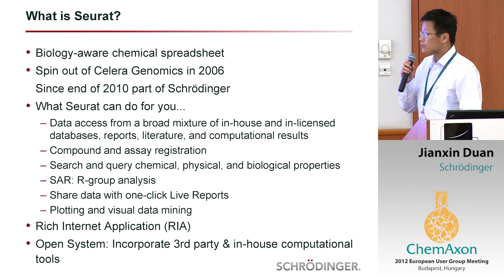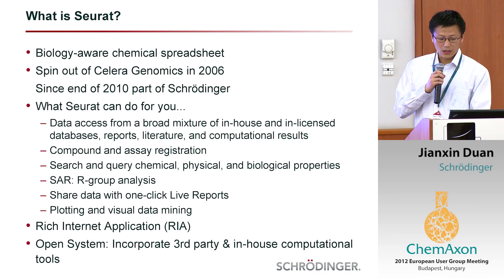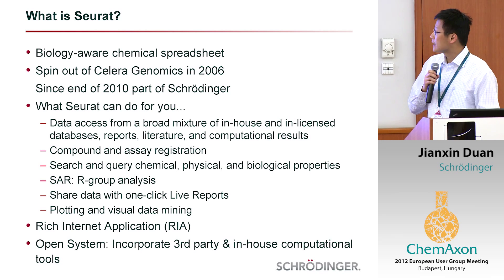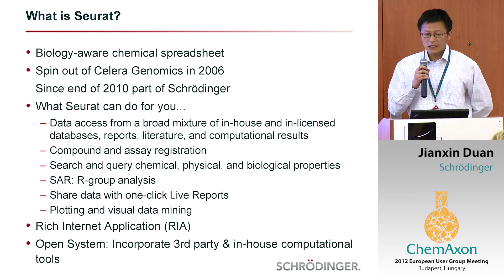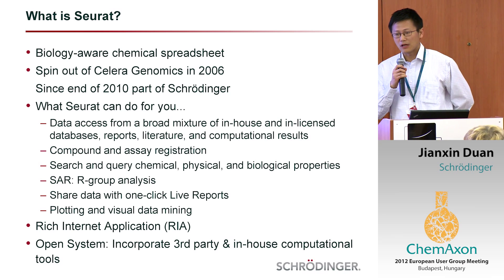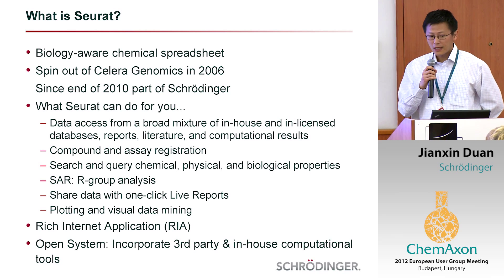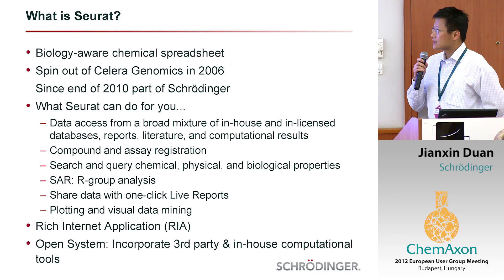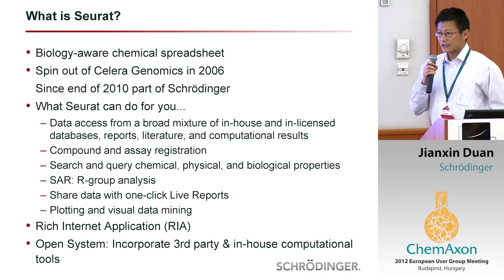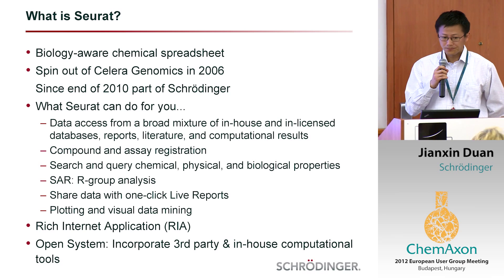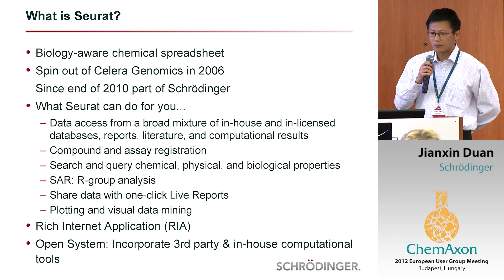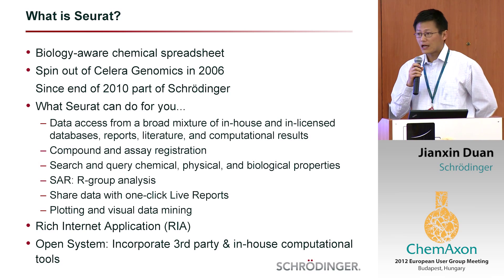What I want to talk about is Syrah. That's a product that we offer for data sharing and visualization. So what is Syrah? It is a biologically aware chemical spreadsheet — it's aware of chemical and biological assays. It was developed at Celera Genomics around 2003 and spun out in 2006. Since 2010, it's part of Schrödinger. It provides data access from a very broad mixture of in-house or in-licensed databases.